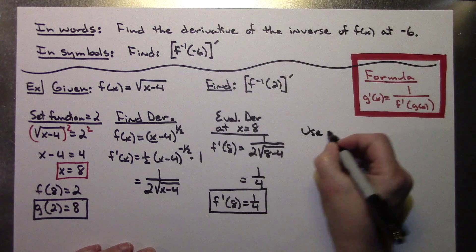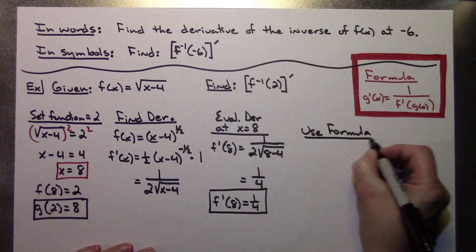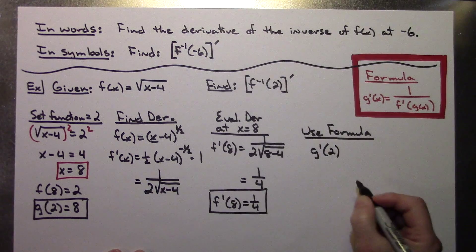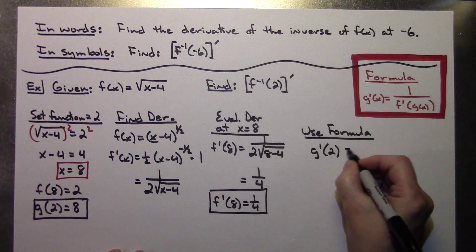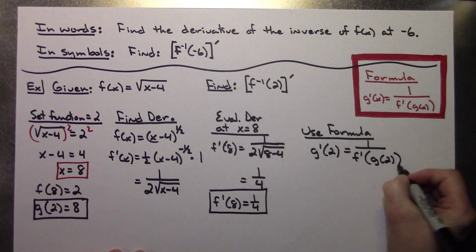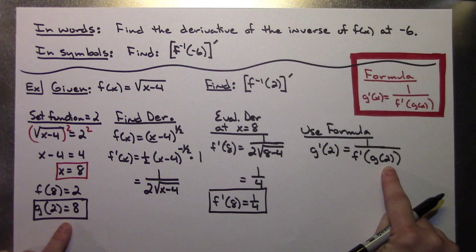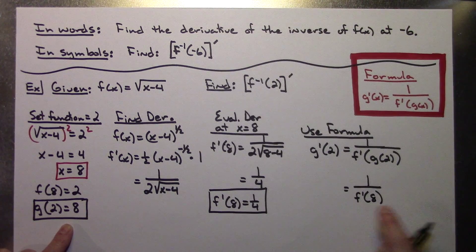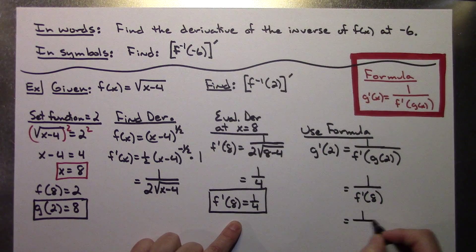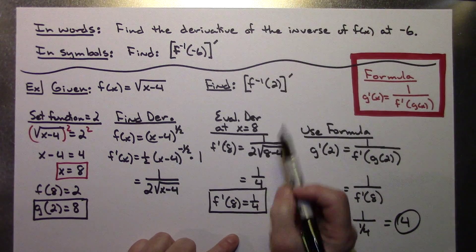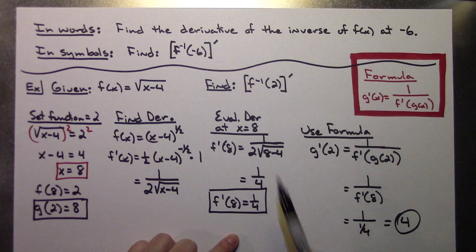Last step: use the formula. G prime of 2 equals 1 over f prime of g of 2. G of 2 I know is 8, so this becomes 1 over f prime of 8. F prime of 8 I know is 1/4. So I've got 1 over 1/4, which simplifies to 4. My derivative of the inverse function at 2 is 4.